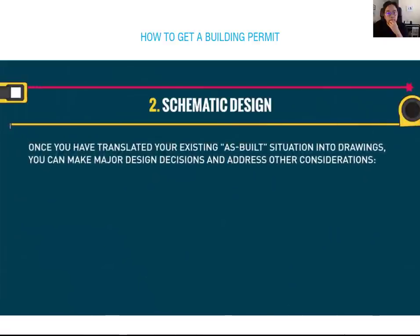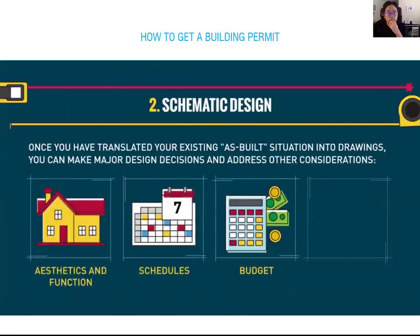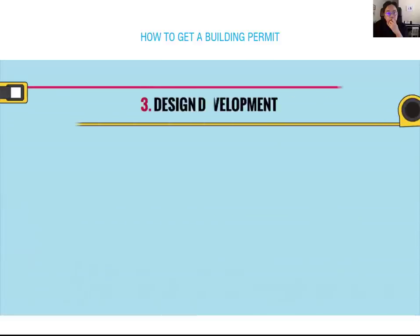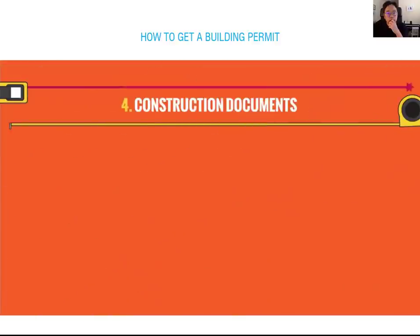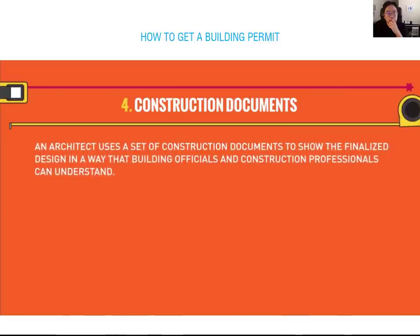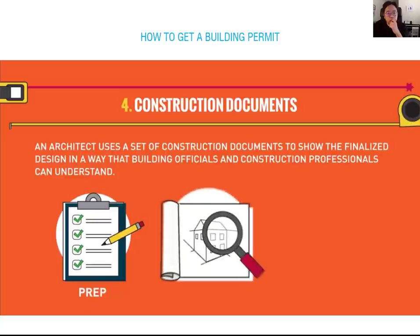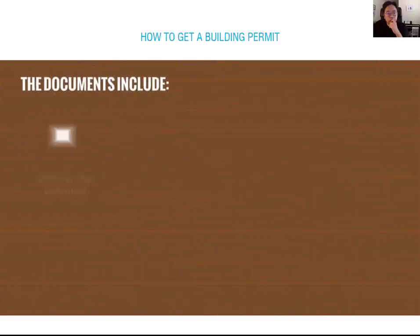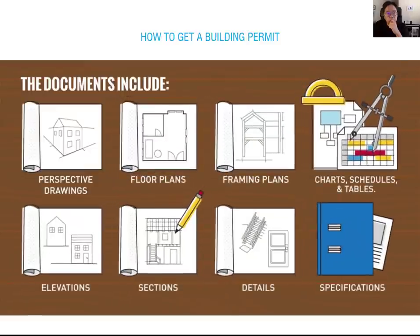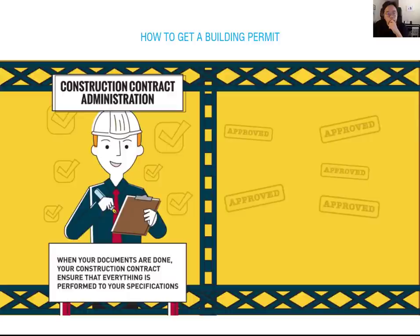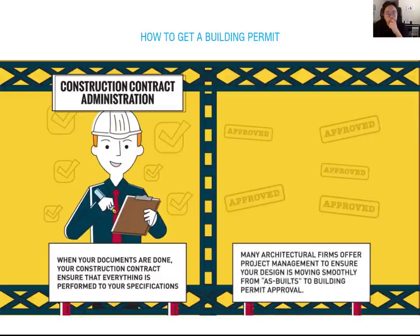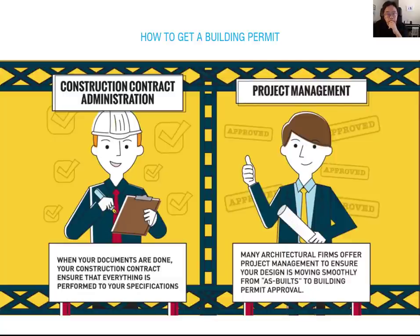Step two: schematic design. Once you have translated your existing as-built situation into drawings, you can make major design decisions. Step three: design development. The schematic design is finalized and consultants are hired as specialists for detailed design requirements. Step four: construction documents. An architect uses a set of construction documents to show the finalized design in a way that building officials and construction professionals can understand. The documents include perspective drawings, floor plans, and more. Your construction contract ensures everything is performed to your specifications.